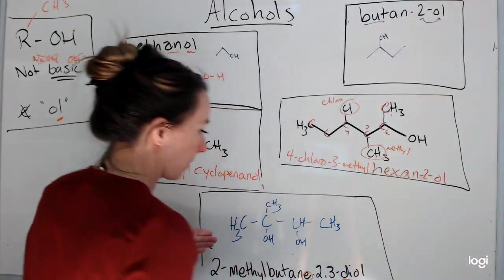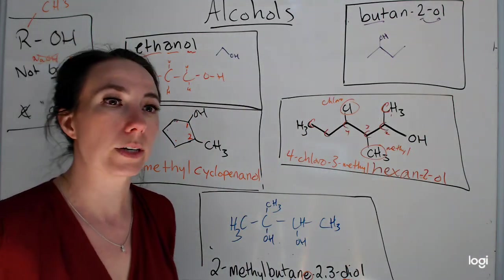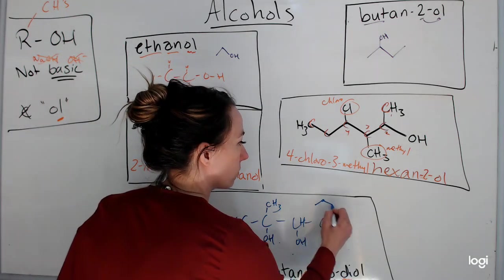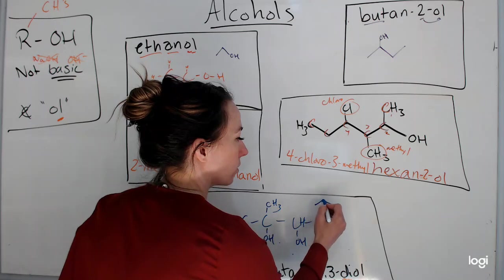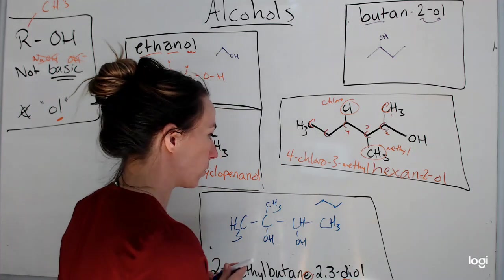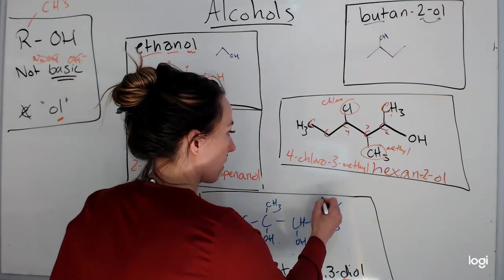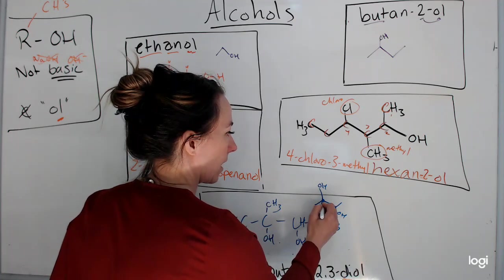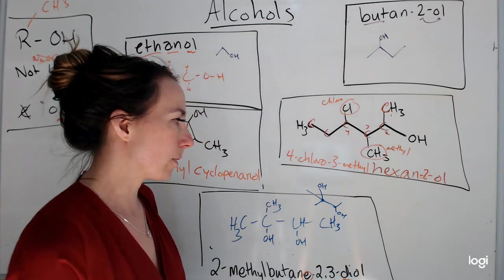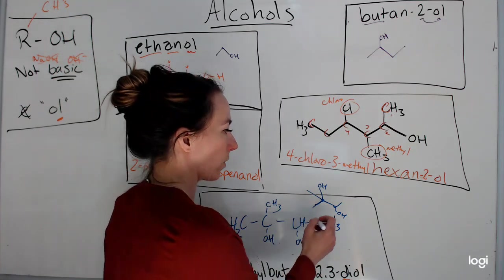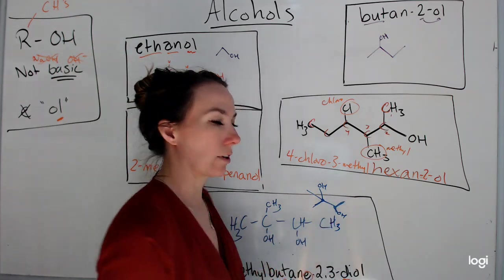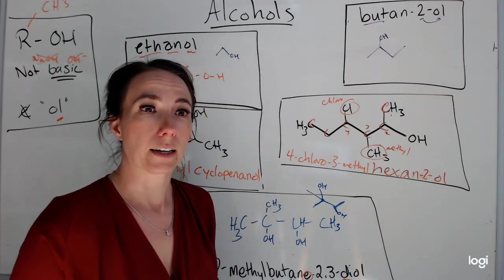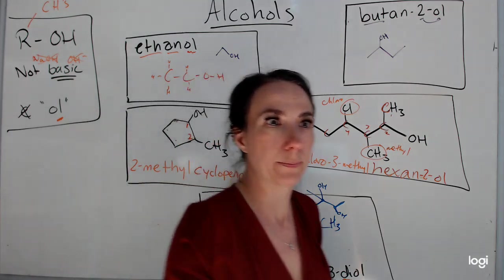So that's the molecular formula for butane-2,3-diol. In terms of a line diagram, it would look like this. One, two, three, four. That's butane. Then I have my OH off of carbon 2, OH off of carbon 3, and a methyl off of carbon 2. So it looks more weird as a line diagram. Okay, so that's alcohols.